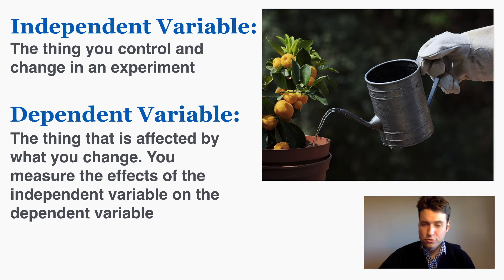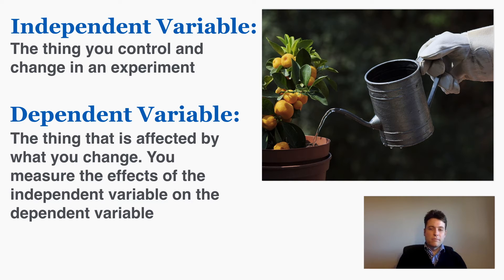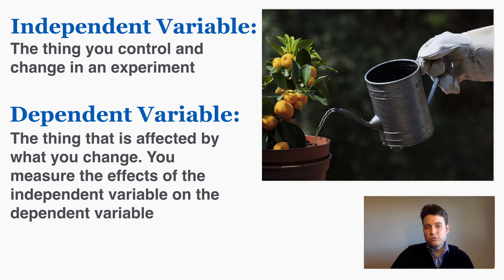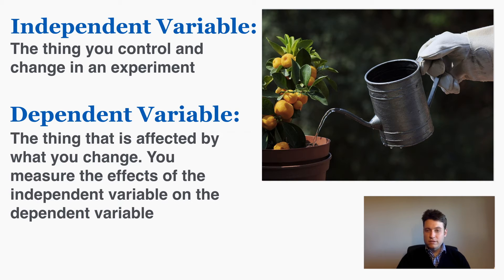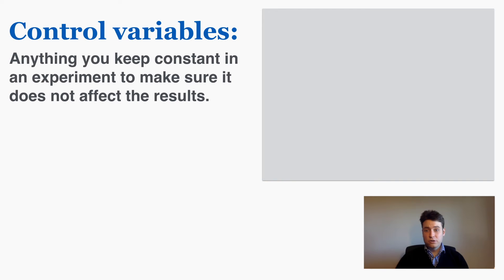Next we're going to talk about control variables. In an experiment a control variable is anything that you keep constant to make sure that it does not affect the results. The only thing you care about is how the independent variable affects the dependent variable. So you want to keep everything else constant — all those other things that you have to keep constant are called control variables. They're things that could vary, that could change, but that you're controlling and preventing from changing.